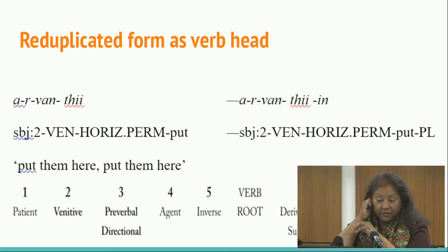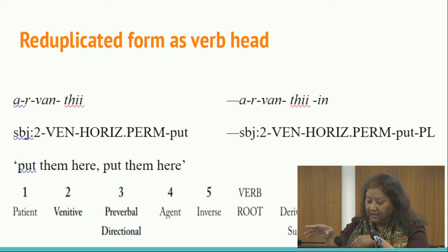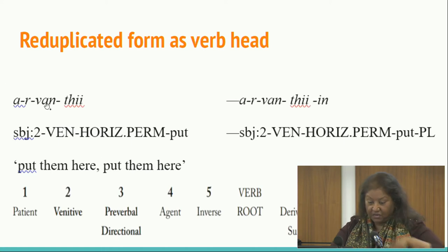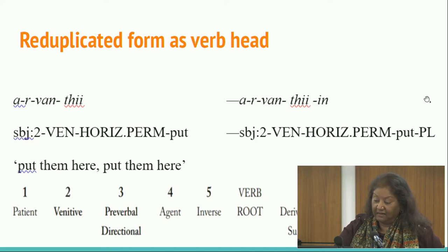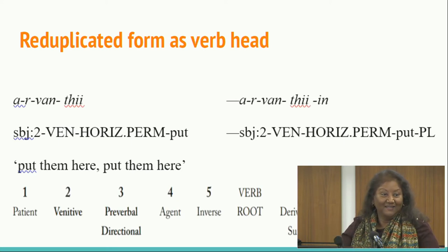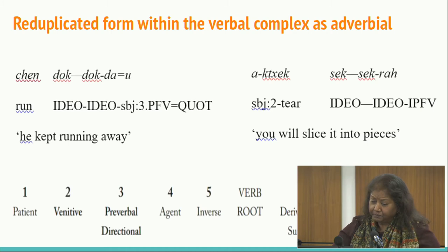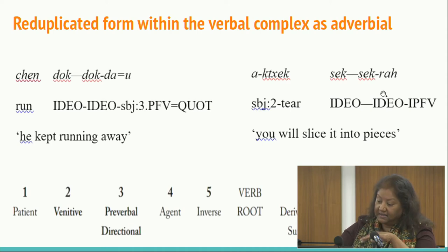Look at this reduplicated form in Lam Kang: you get a very large chunk that is zone one, zone two, then the main verb, the entire thing copied, and then zone seven at the end. We want to show that this is not a compound but a reduplicated form, and we need to find a way to do that. Here zone six is copied — you've got 'chen' and then 'dokdok dao' and 'seksekura' right in the middle — and again we're trying to use the M-dash to show how that happens.